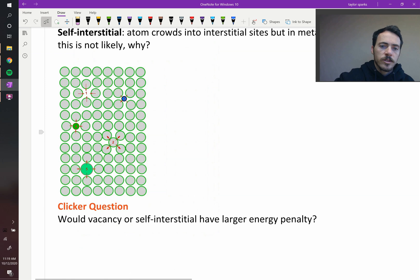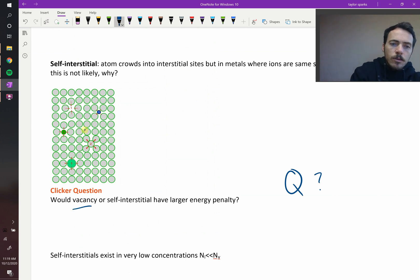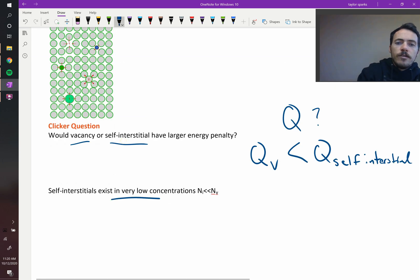Alright, how about this question? Would a vacancy or a self-interstitial have a larger energy penalty? Or in other words, which one's going to have the largest activation energy? Will the vacancy or self-interstitial? A large activation energy means that's the price you have to pay from an energy standpoint to form this thing. So I hope you'll see that a vacancy should have a lower activation energy than the activation energy for a self-interstitial. Now, why is that? Well, a vacancy, the atoms can relax into that spot a little bit. But a self-interstitial, they're going to have to really cram the atoms more out of the way. And so there's more lattice disruption with a self-interstitial. Because of that, self-interstitials exist in very low concentrations. The number of your interstitials is typically much less than the number of your vacancies.